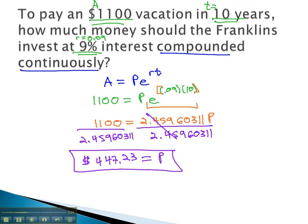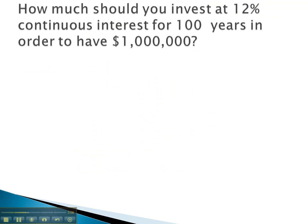Let's take a look at another example, where we seek to find the principle that will earn us a million dollars in 100 years. Again, we see the key phrase continuous interest, which tells us the equation we should use is A equals P e to the rt.